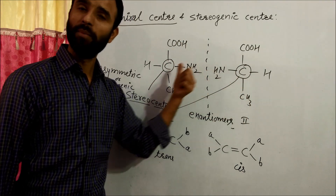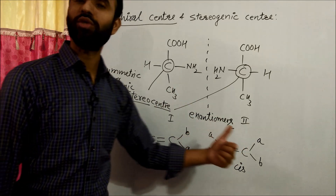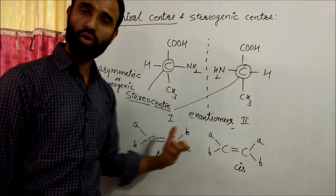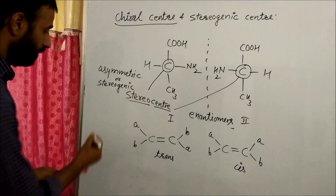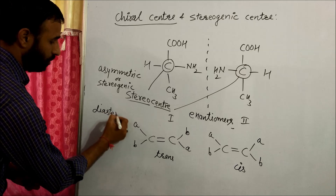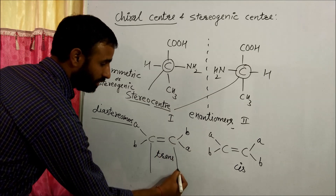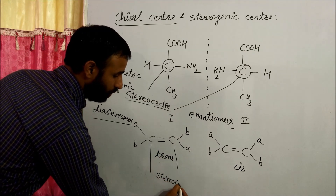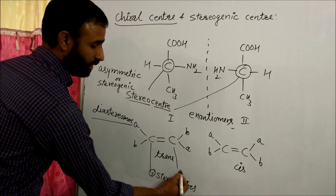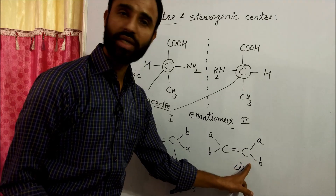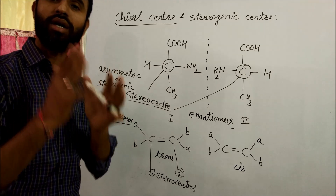Cis and trans are stereoisomers, but they are not mirror images of each other. Those stereoisomers where there is no mirror image relation are known as diastereomers. So cis and trans are diastereomers. These carbons in the double bond have two stereocenters — stereocenter 1 and stereocenter 2 — but these stereocenters are not chiral centers.